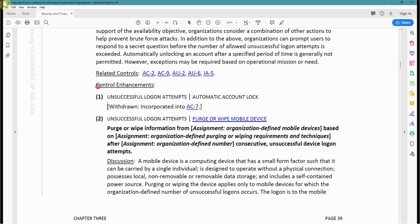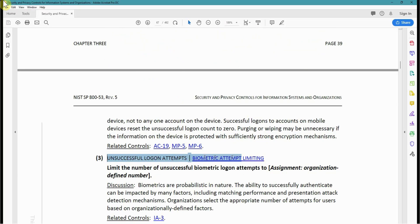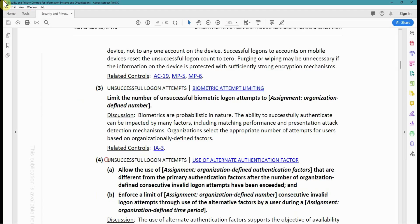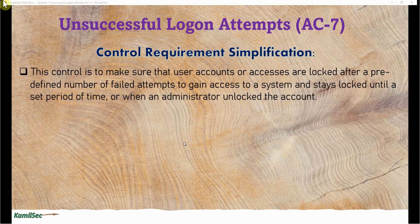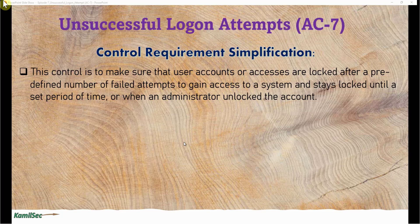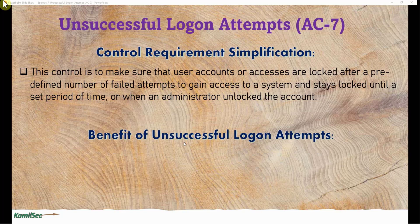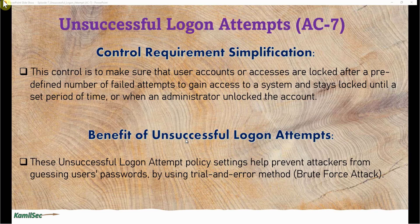AC-7 has four control enhancements: number one, two, three, and four. The control requirements simplification: this control is to make sure that user accounts are locked after a predefined number of failed attempts to gain access to a system, and stay locked until a set period of time passes or when an administrator unlocks the account. The benefit of the unsuccessful logon attempt policy is that it helps prevent attackers from guessing users' passwords by using the trial and error method — that is, a brute force attack.